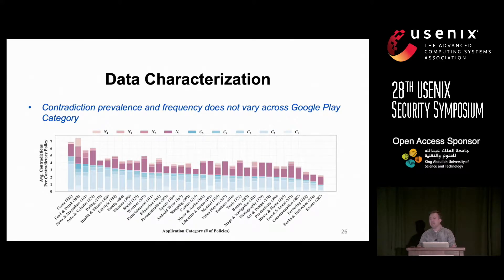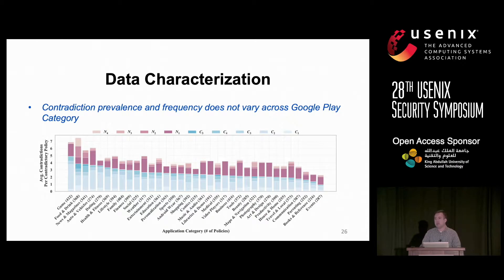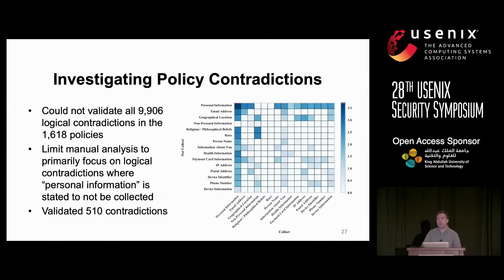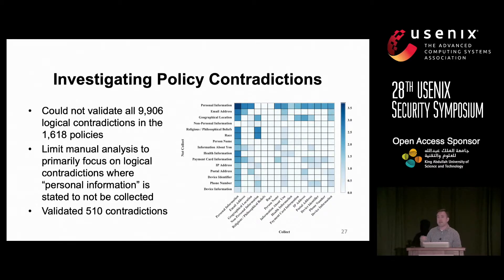We broke it down by application category and average number of contradictions, showing that contradiction prevalence does not vary meaningfully across Google Play categories — it's a distributed problem. We dug into outliers and found they were skewed by some very highly contradictory policies; the long tail of a CDF in the paper hit 42 contradictions in a few policies. We couldn't investigate all 9,900 logical contradictions, so we took a subset by examining a heat map — the top row shows contradictions where they say they do not collect personal information but collect some subtype. Overall we validated 510 contradictions, which took about a week's worth of manual effort.